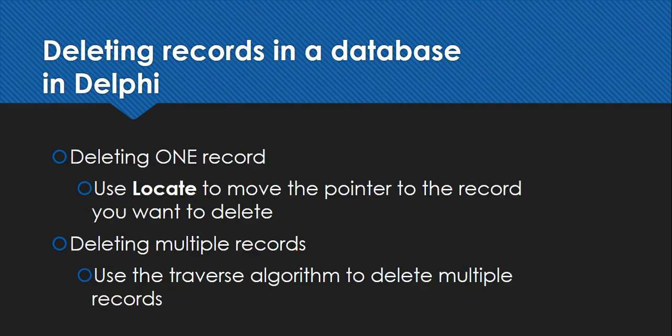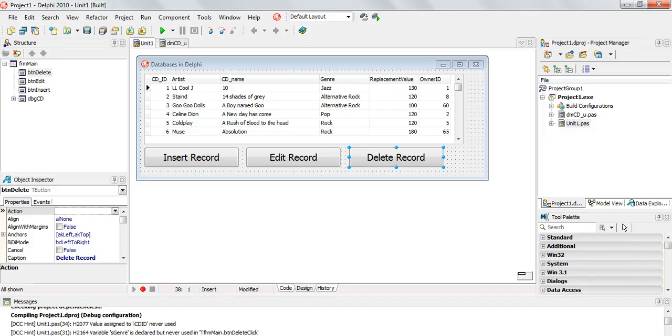If we're deleting one record, we just make sure we go to the right record - we can use locate or whatever means we want to move the pointer to the record we want to delete. When deleting multiple records, we're going to use the traverse algorithm - you can watch videos about that on our YouTube channel. That automatic movement to the next record will come into play when we do an example of deleting multiple records.